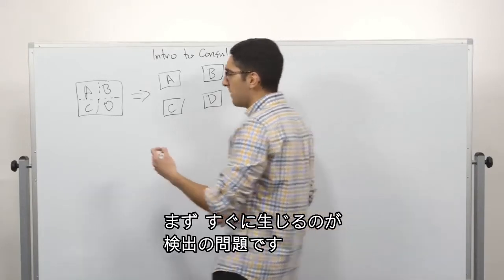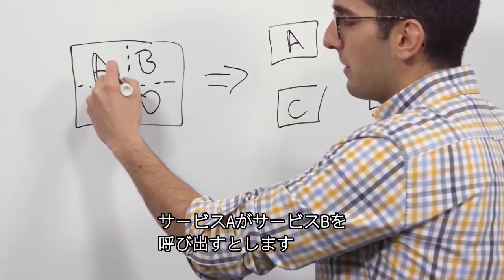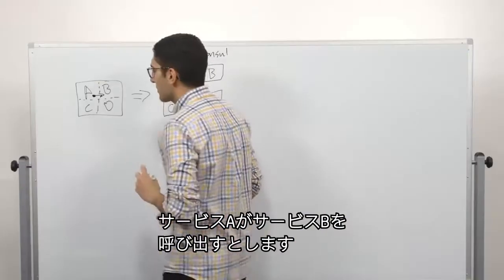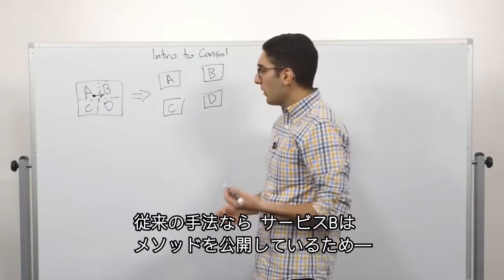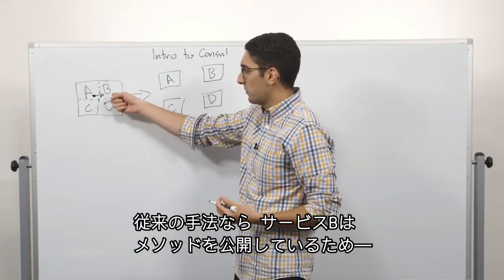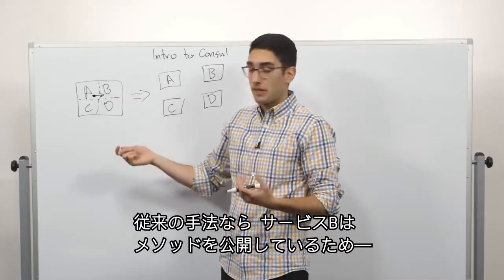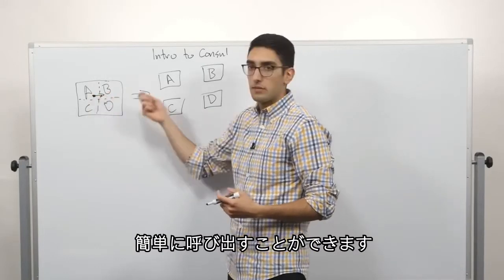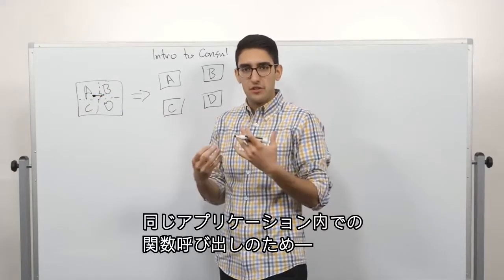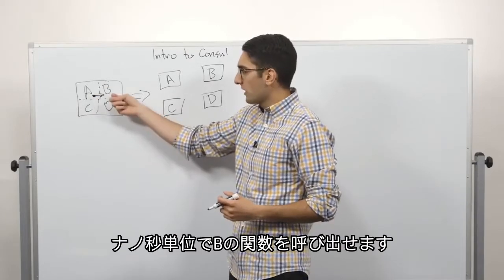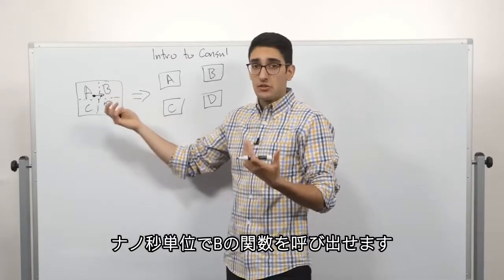Let's go through some of those. The first one, the most immediate, is discovery. And what I mean by that is let's say service A wants to call service B. The way you would traditionally do this is service B would expose a method, mark it as public, and then service A can just call it. They're in the same application. It's just a function call. So when A is calling a function in B, this takes nanoseconds.